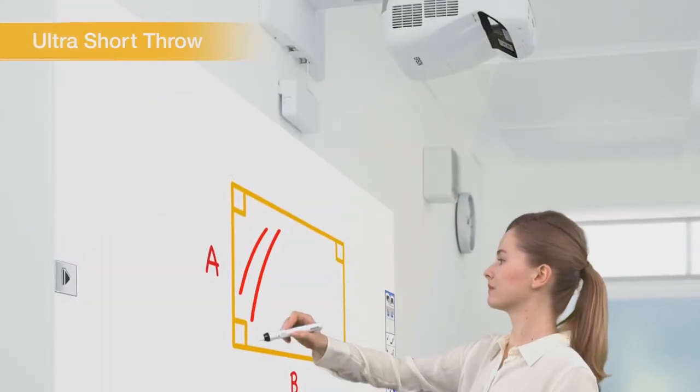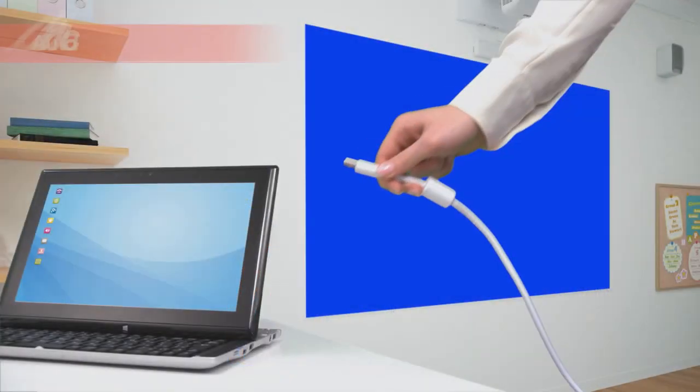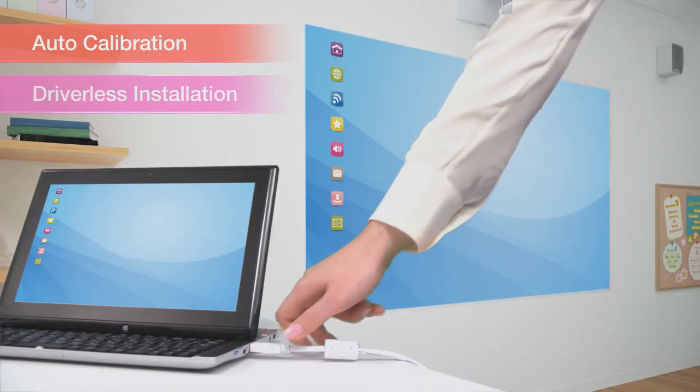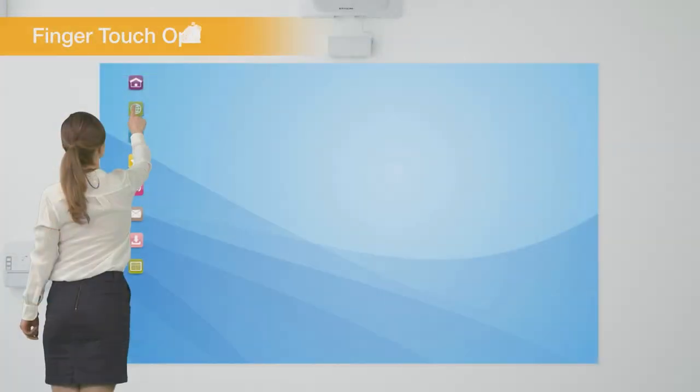Ultra-short projection limits shadows on the projected image. Simply connect a USB cable, run the auto-calibration, and right away you are ready for interactive use.